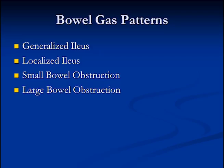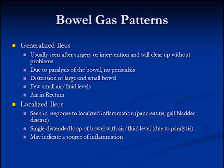There are several gas patterns you should be able to recognize on plain film: a generalized ileus, a localized ileus, small bowel obstruction, and large bowel obstruction. Generalized ileus is usually seen after surgery or intervention involving handling of the bowel. It's caused by paralysis of the bowel with very little peristalsis — no bowel sounds, and the patient doesn't pass gas for a while, but it will pass on its own. On x-ray you're going to see distension of loops of large and small bowel, very few and small air-fluid levels, and there's usually air in the rectum, meaning air is throughout the bowel with no obstruction.